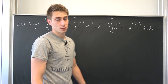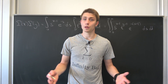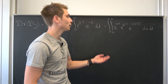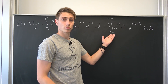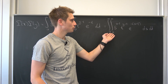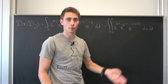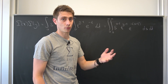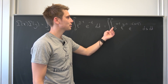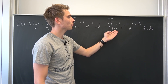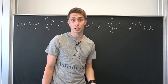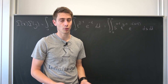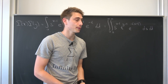What I would like to do is introduce a polar coordinate substitution, because we are dealing with the half of the real numbers as an interval. We are going to extend this to the whole real numbers. We are also dealing with an exponential function, and this means we can make use of polar coordinates pretty easily.